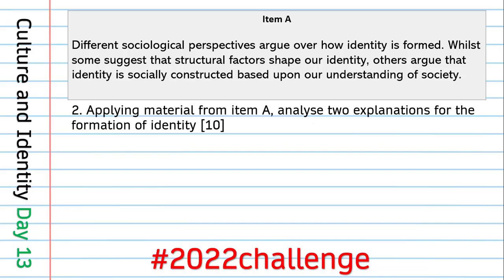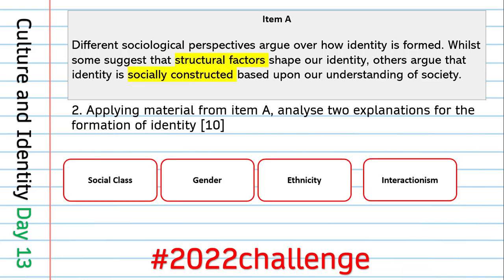Looking at the item, the two hooks to pull out are 'structural factors' — meaning social class, gender, and ethnicity — pointing toward Marxist and feminist theories. The second hook is 'socially constructed,' which should signal interactionism, since interactionists see society as produced through social interactions. Whenever you see 'socially constructed' in an exam, treat it as a prompt to discuss interactionism.